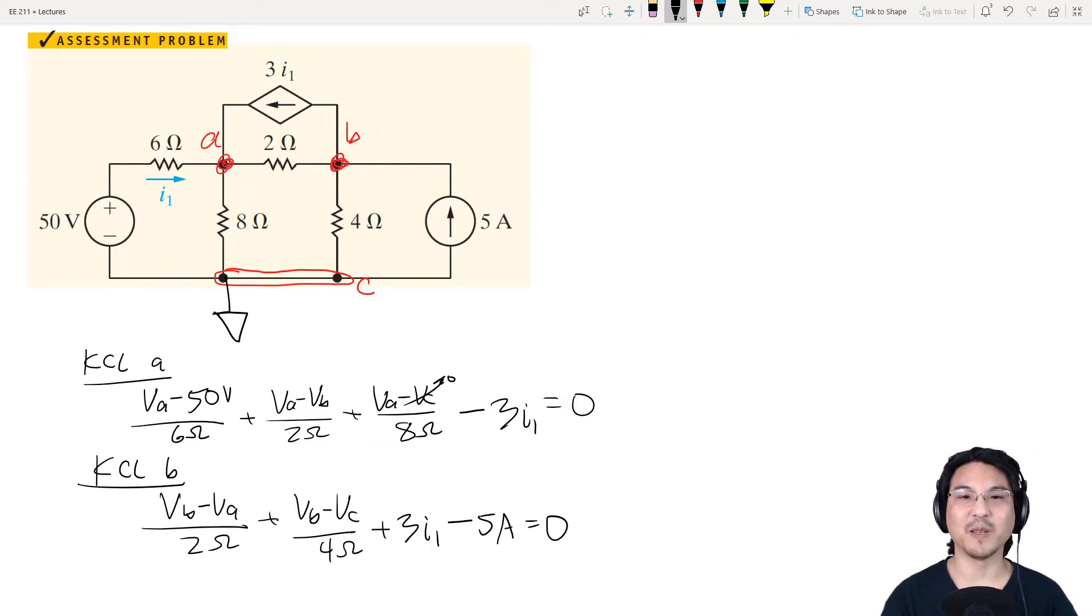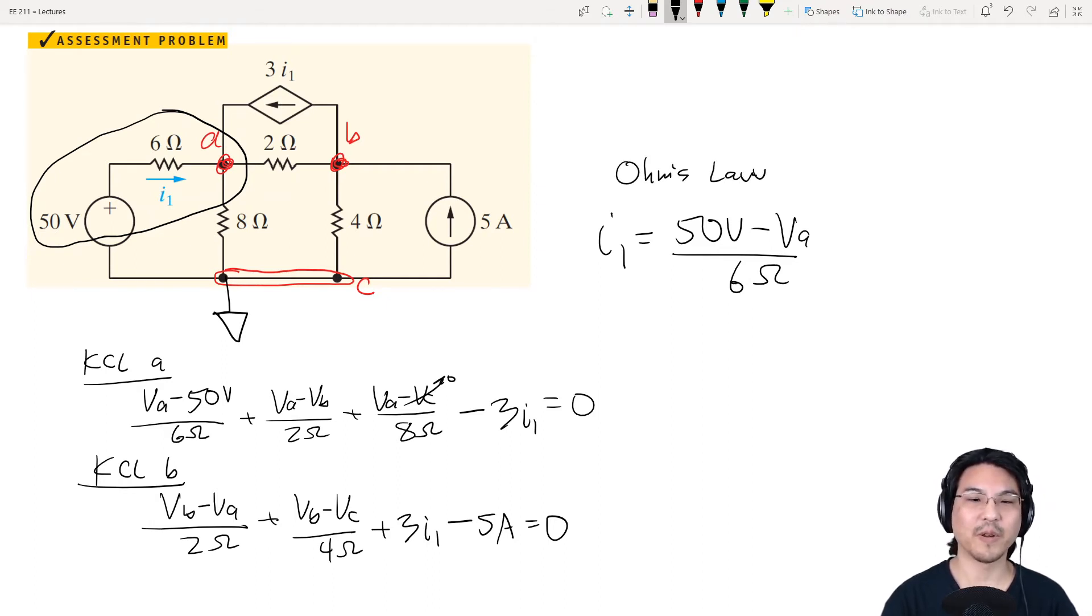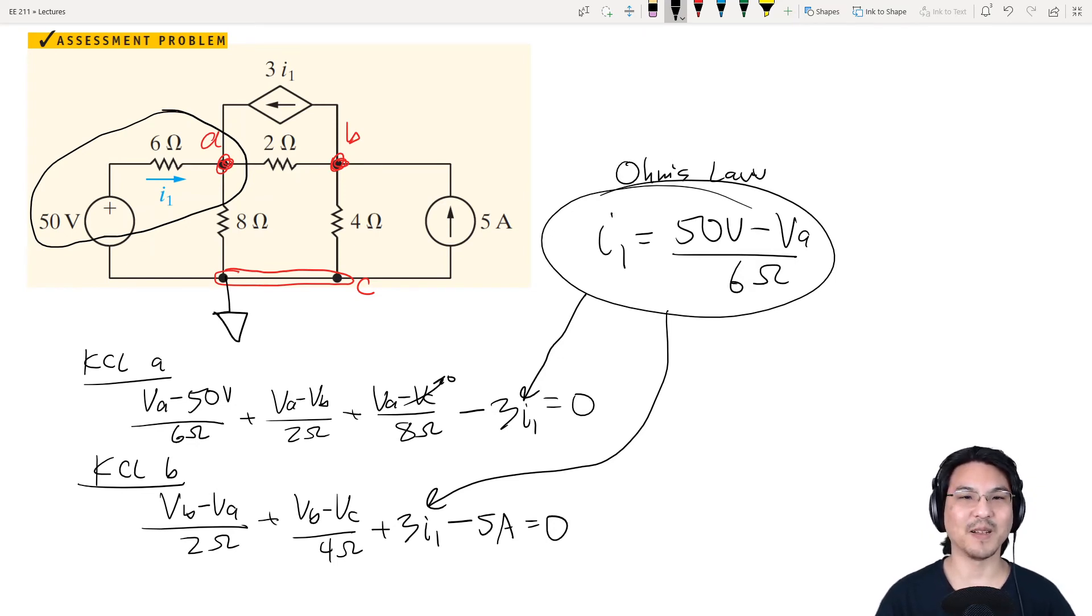So we did KCL for nodes A and B. We have two equations, three unknowns. We need one more equation. So let's write an expression for this current using Ohm's law right here. I1 is 50 minus VA over 6. And here we go. Three equations, three unknowns you can solve, right? I would take this and substitute it right here and right there. And then you have two equations in VA and VB. Solve just through substitution. And then you got both node voltages. Let's hope that was helpful. Keep on studying and I'll see you on the next video.